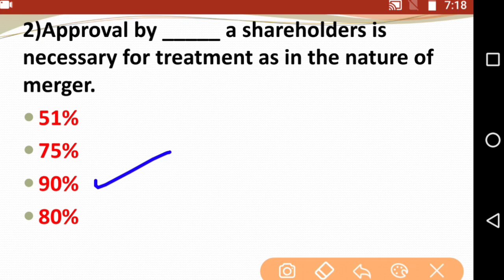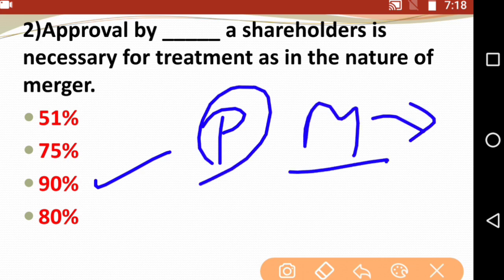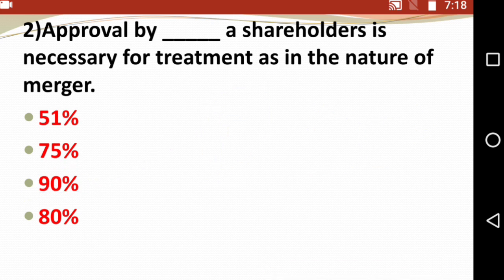There are two types: amalgamation in the nature of purchase, and amalgamation in the nature of merger. We know the other method as the pooling of interest method. In amalgamation in the nature of merger, 90% shareholder approval is required. Answer is 90%.